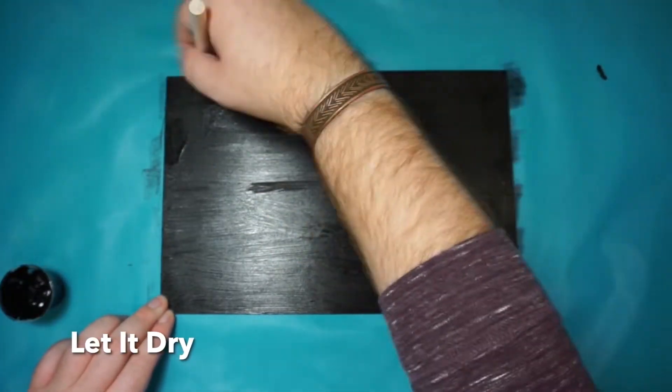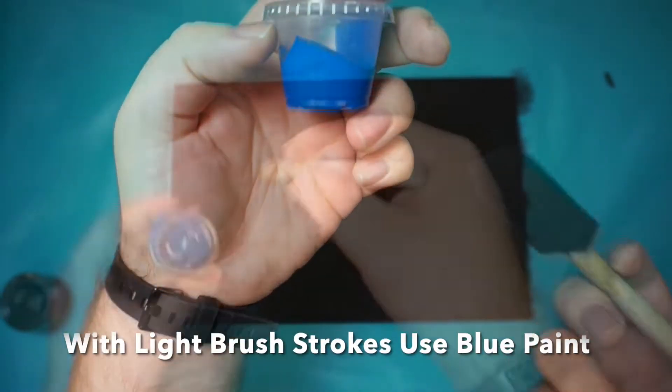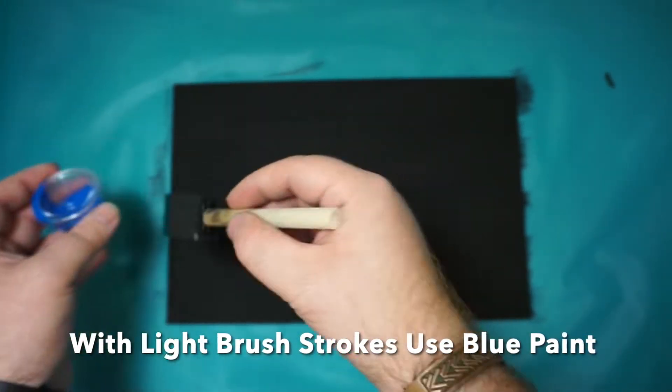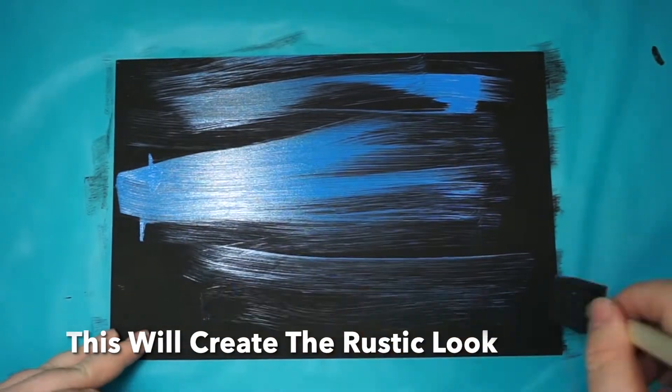Once we're done, we're going to let it dry. Now, once it's dry, take our blue paint and with light strokes, go across the wood board. You might get a different shade of blue in your kit, but that's okay.